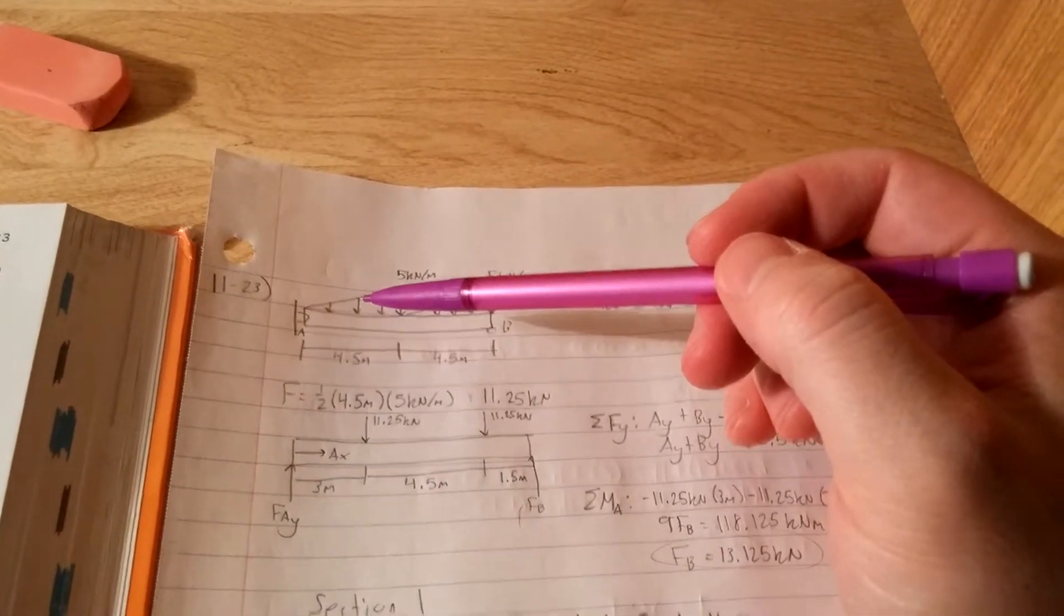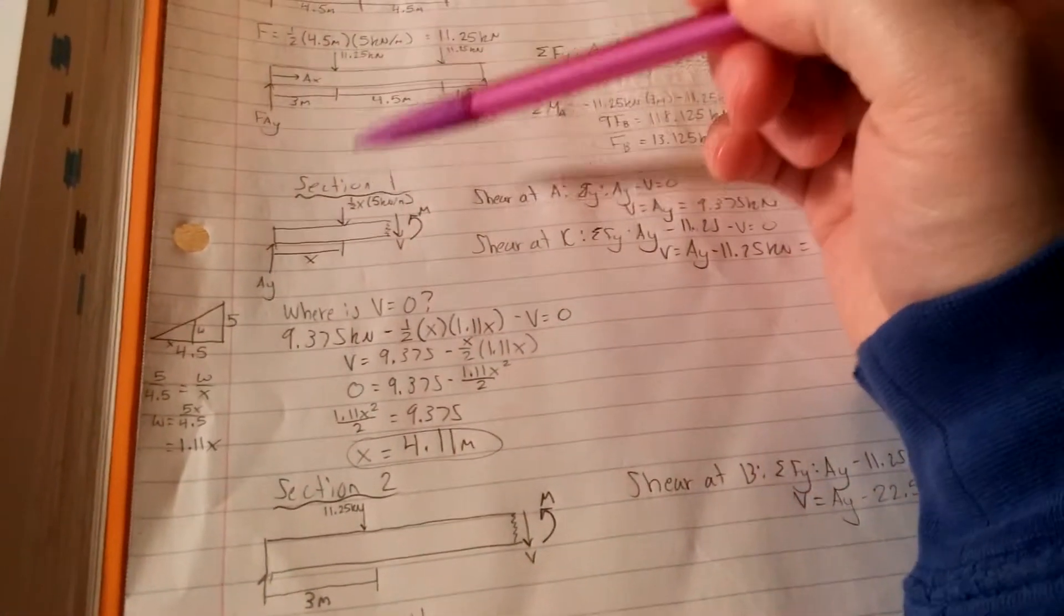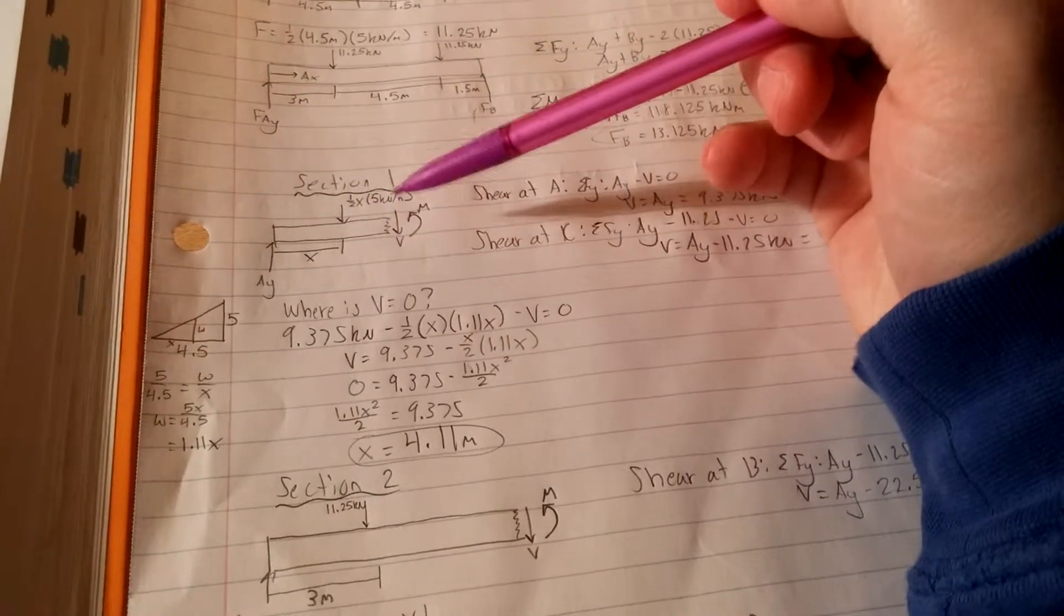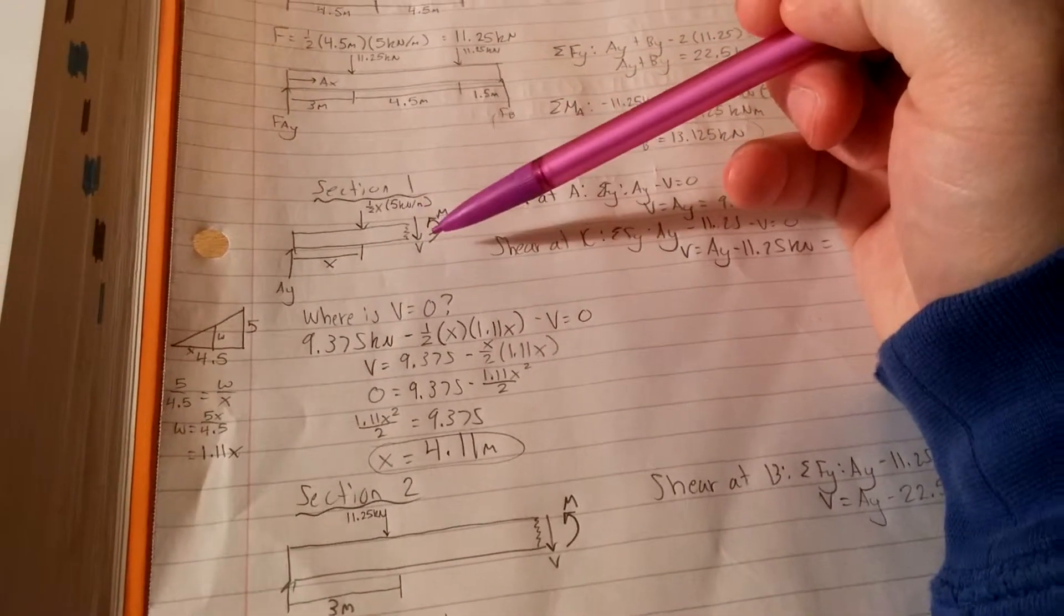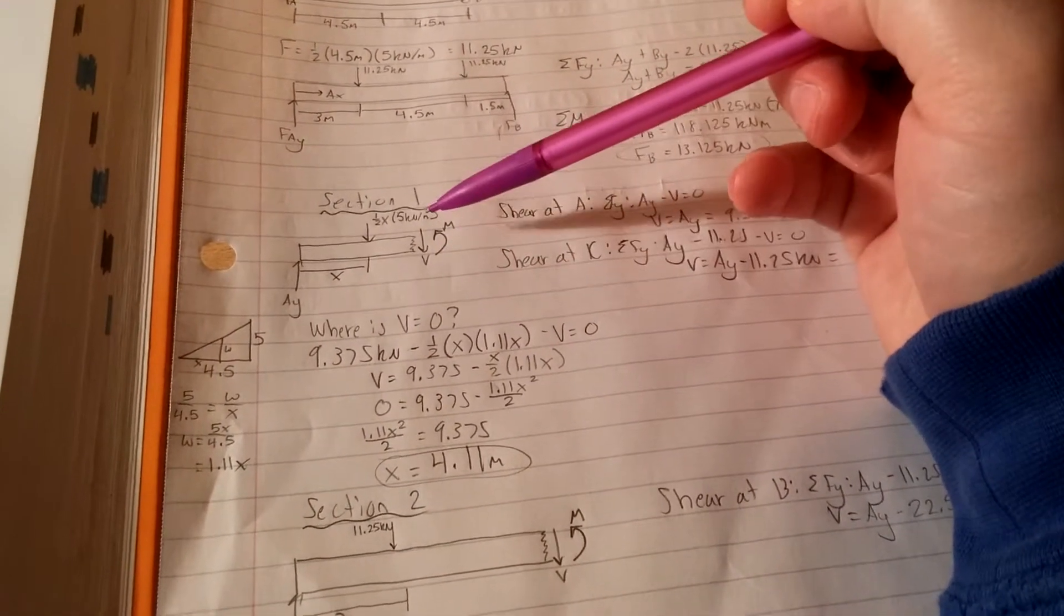For a complete graph, you're going to want to find that, and I'll explain how to do that later. Section one, I just cut it off. Shear points down, moment rotates towards the top.